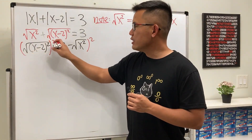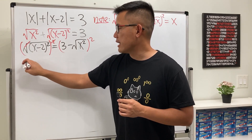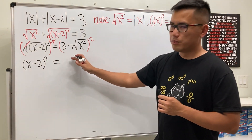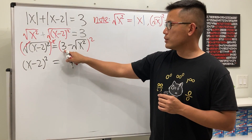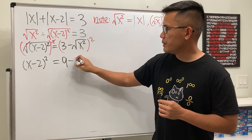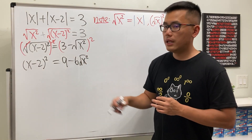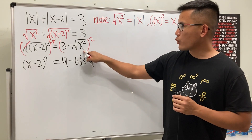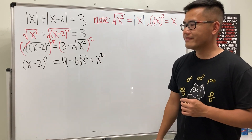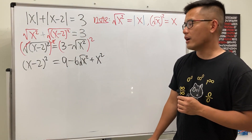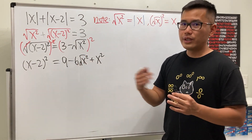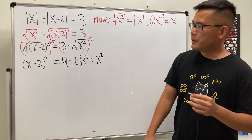On the left side we can legitimately cancel the square and square root, leaving (x − 2)². On the right side, expanding gives: 3² = 9, minus 2 × 3 × √(x²) = −6√(x²), and lastly (√(x²))² = x². We almost have a quadratic except we still have the √(x²) term, so let's isolate it.